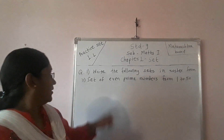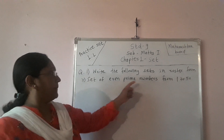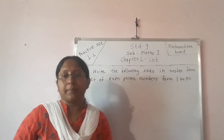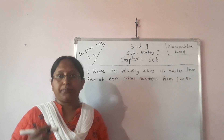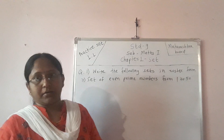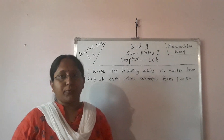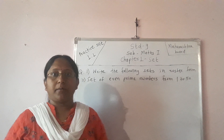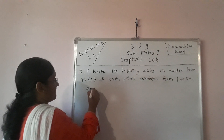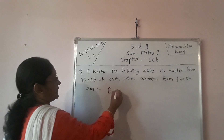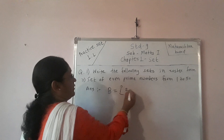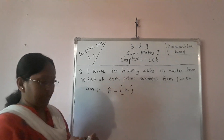Second sub-question: set of even prime numbers from 1 to 50. We know the prime numbers are 2, 3, 5, 7. But the even prime numbers from 1 to 50 — there is only one even prime number, that is 2. So the answer is: I declare that set as B, and in curly brackets, the answer is {2}.